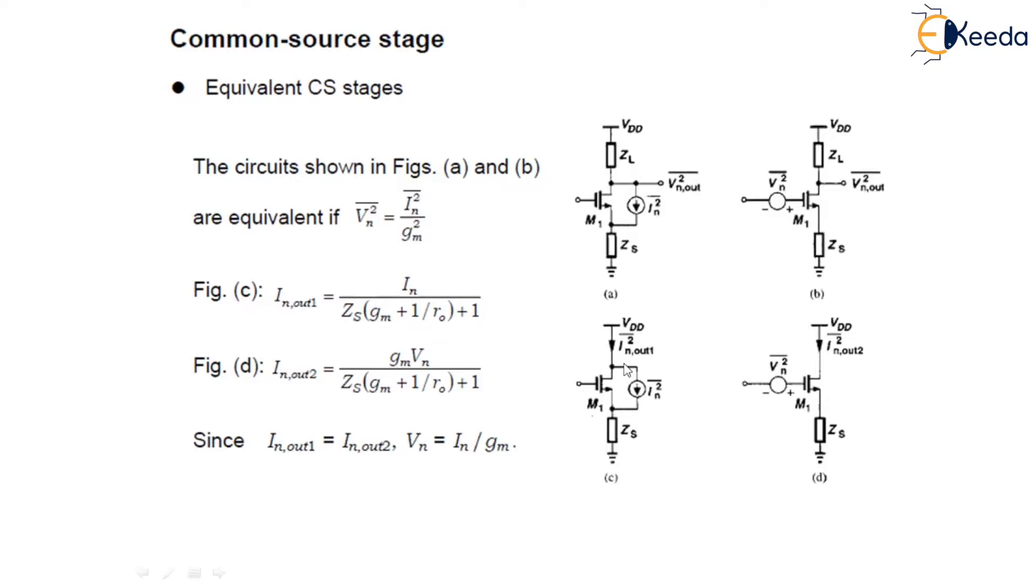what we are doing? We are now finding the short circuit current in both of these circuits as they are having an equal output impedance. So we will find out Im squared out1 and Im squared out2.